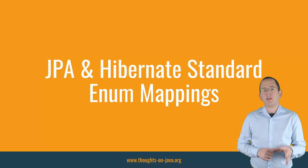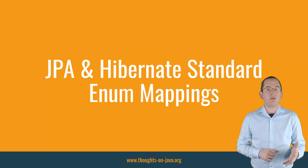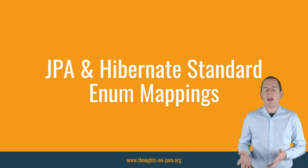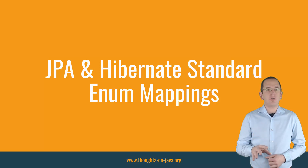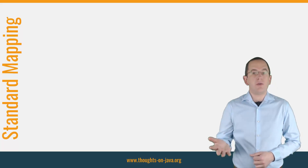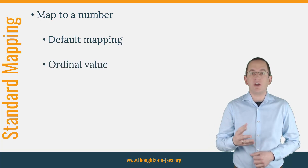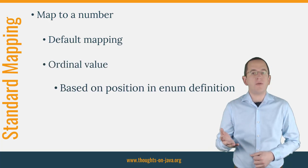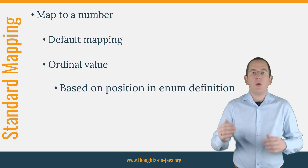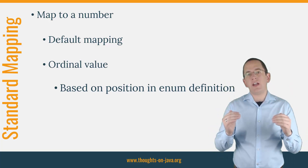The Rating enum is used in the Review entity to represent the rating of a book. Enums are a first-class citizen of the Java language and used in most domain models, so it's no surprise that JPA and Hibernate provide a standard mapping for them. You can choose between two mappings. By default, Hibernate maps an enum to a number, using the ordinal value — which is the zero-based position of a value within the definition of the enum.